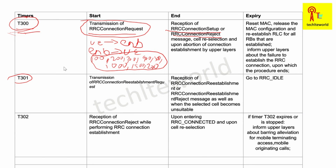The next timer is T301. T301 starts upon the transmission of an RRC Connection Re-establishment Request. When the RRC connection procedure fails and the eNodeB sends an RRC Connection Reject, the UE will try to re-establish the RRC connection by sending an RRC Connection Re-establishment Request to the eNodeB, and at that point T301 starts.